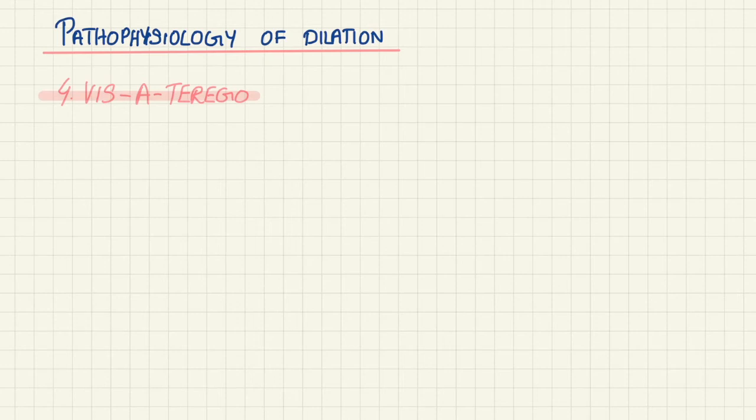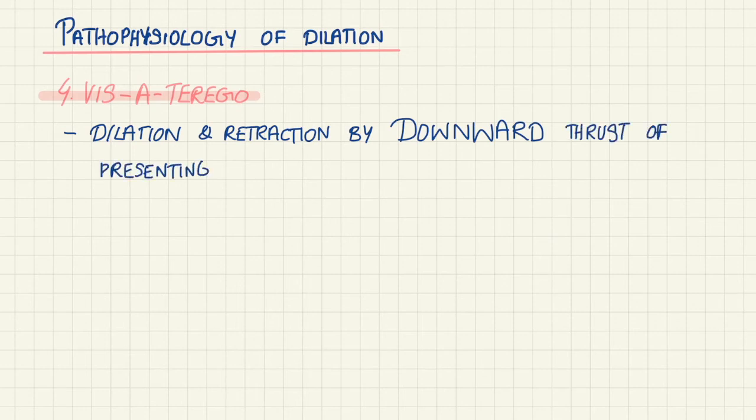Finally, there's a theory known as vis a tergo, which is simply the dilation and retraction of the cervix achieved by a downward thrust of the presenting part of the fetus, leading to an upward pull of the cervix of the lower segment.